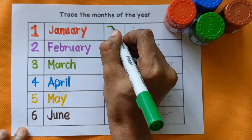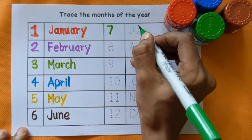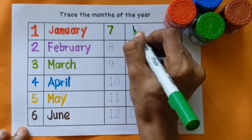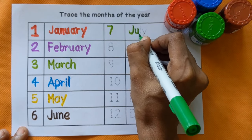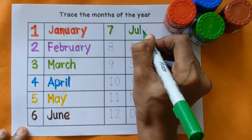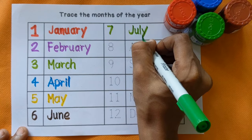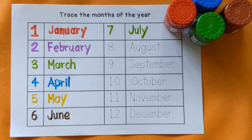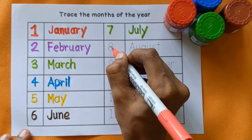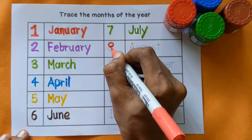Number 7. J, U, L, Y — July, light green color.